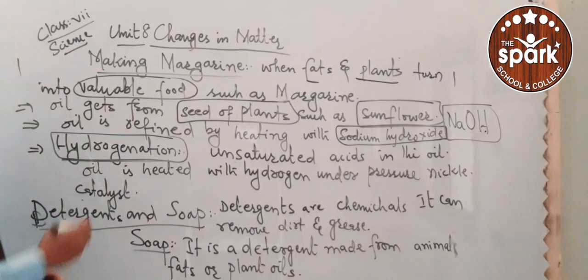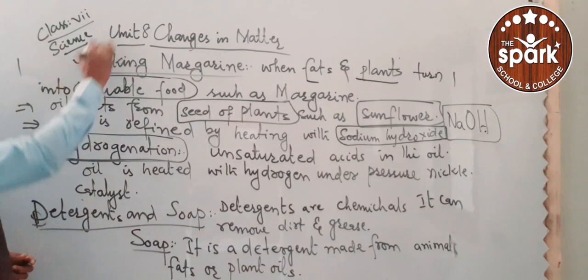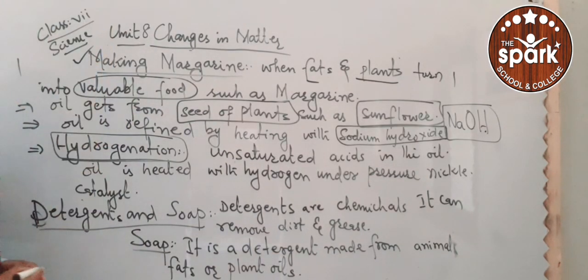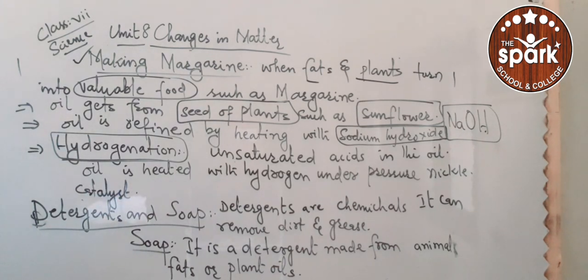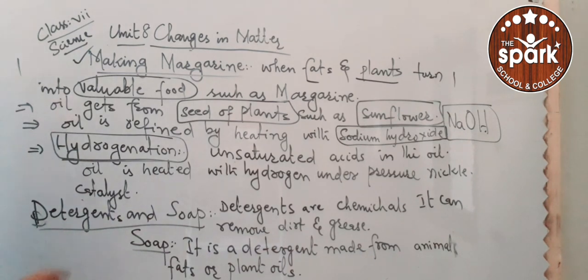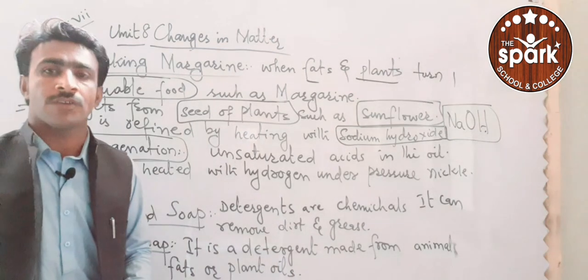So dear students, this was the topic of making margarine. If you look in your book, there is also a picture — a process diagram — showing how margarine is made. You can see that diagram in your book. Next, we have the topic of detergents and soap.